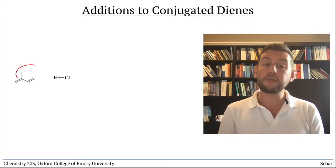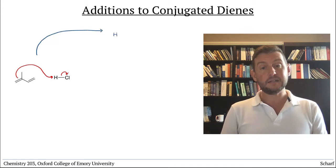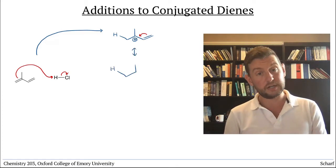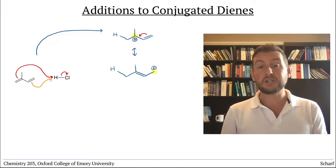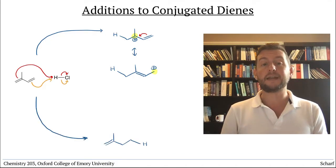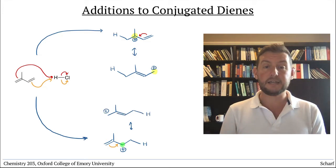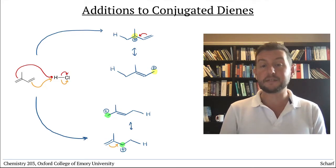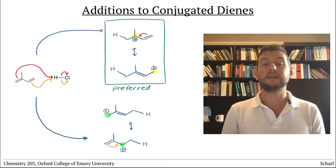For 2-methylbutadiene, for instance, protonation at this end gives a carbocation that has its positive charge delocalized between a tertiary and the primary site, but protonation at the other end gives a carbocation delocalized between a secondary and a primary site. Since tertiary carbocations are more stable than secondary ones, the first regioisomer is the preferred one.